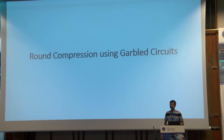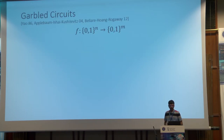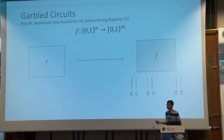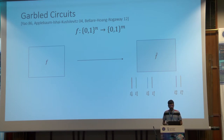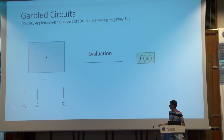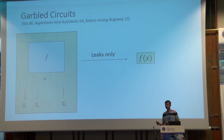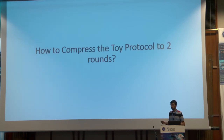The main computational tool we will use is garbled circuits, introduced in the seminal work of Yao. Garbled circuits allow one to encode a Boolean circuit F into a garbled circuit F-tilde, along with a pair of labels for each input wire — one label corresponding to bit 0 and another corresponding to bit 1. Given the garbled circuit and the labels corresponding to an input X, one can evaluate F of X. The security property is that the garbled circuit along with these labels does not reveal anything about F or X apart from just F of X.